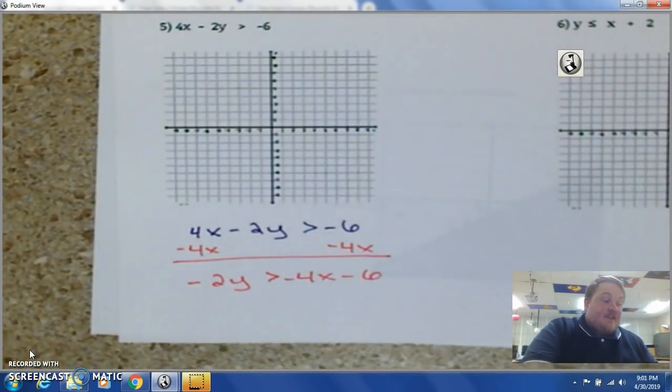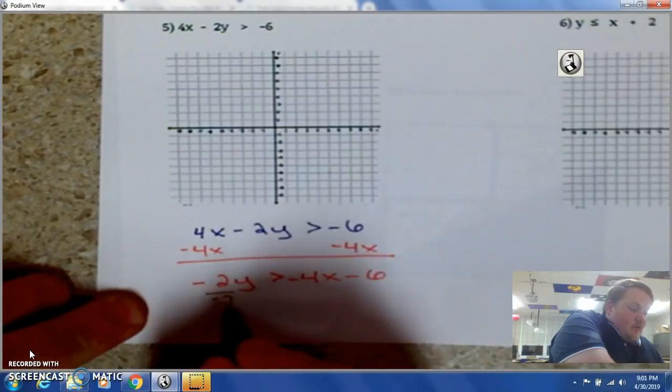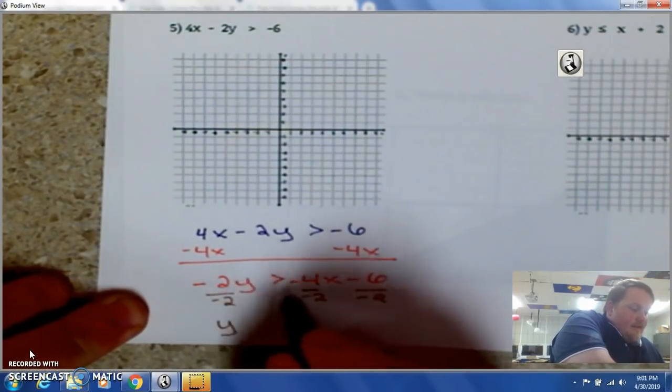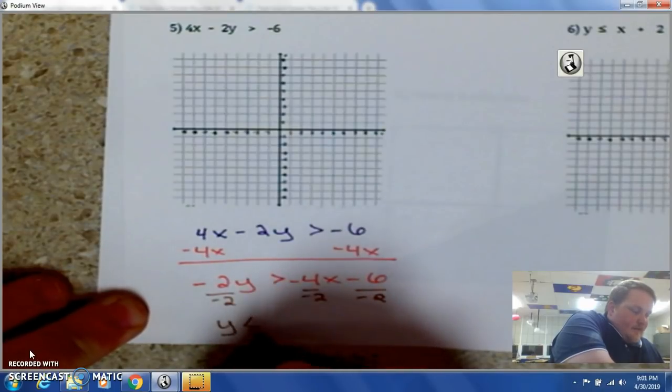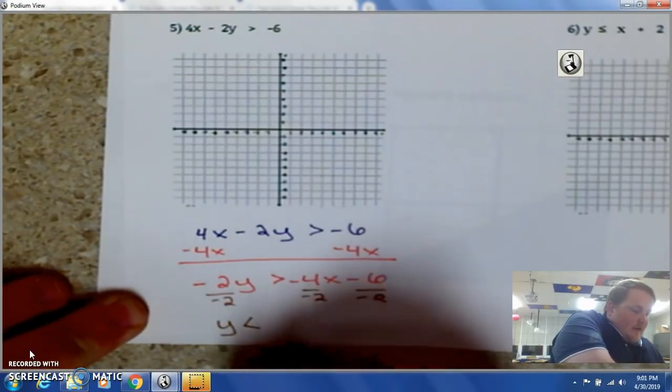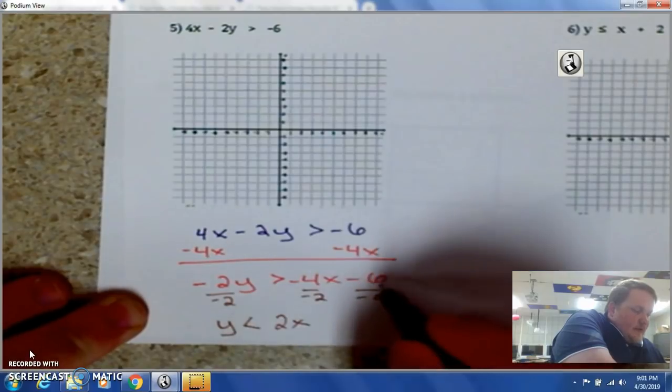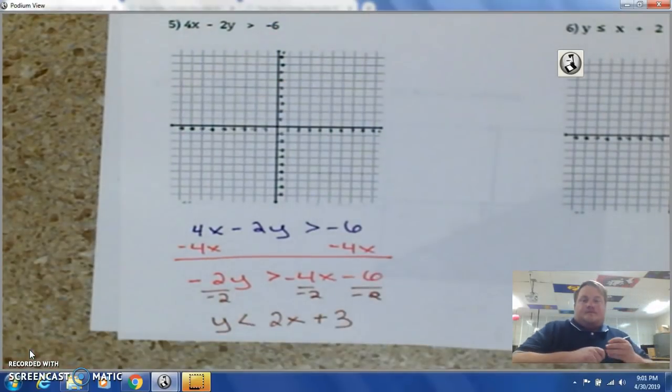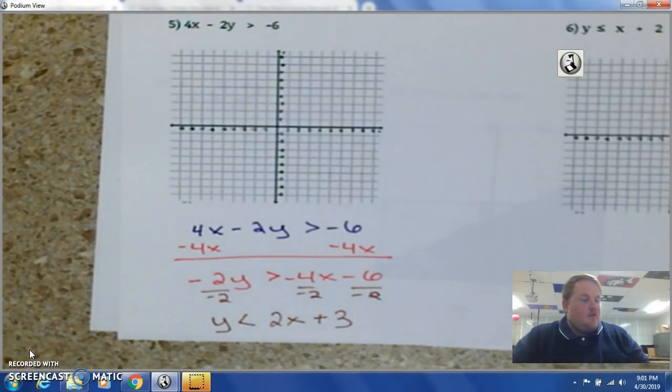I have negative 2y is greater than negative 4x minus 6. And then, I have to divide by that negative 2 to everything. And I get y. Sign changes because I'm divided by negative. Negative 4 divided by negative 2 is 2x. Negative 6 divided by negative 2 is positive 3.